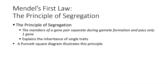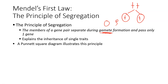Mendel's first law is the Principle of Segregation. Segregation simply means to separate. When we make gametes — eggs or sperm — your genes separate, and each gamete passes only one gene. For example, if I'm homozygous recessive, when I make an egg cell, one egg gets little t and the other egg also gets little t. This describes how we pass along a single trait, and the Punnett square will show how this principle occurs.